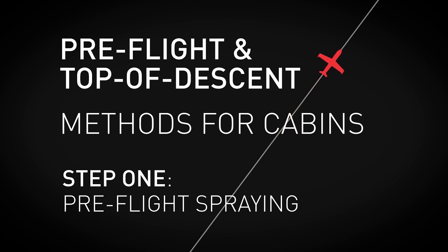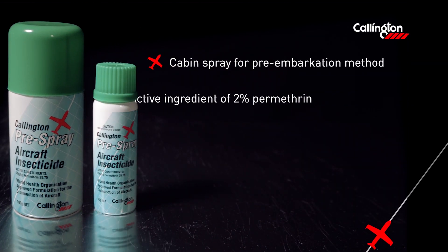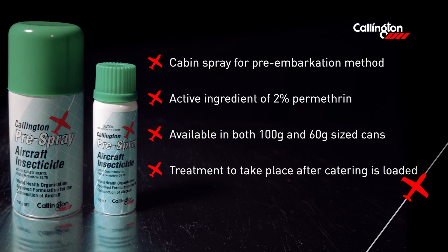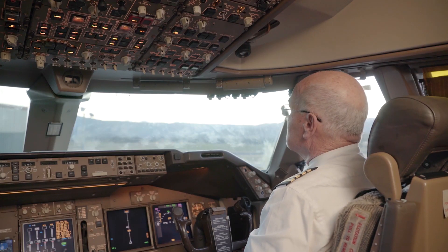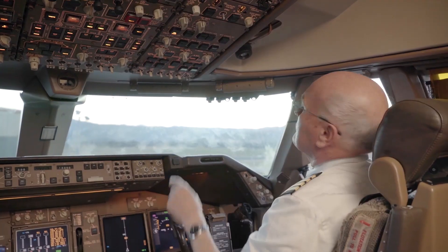The first step in this two-part method, pre-flight disinsection, involves the spraying of empty aircraft cabins before passengers board. For this treatment, Cullington recommends the 100g multi-shot pre-spray aerosol can, which contains a 2% permethrin active. Pre-flight treatment must take place after catering has been loaded onto the aircraft and before passengers board. For ventilation purposes, you may leave one main entry door per level open while the cabins are being treated. Air conditioning must be kept off during disinsection and afterwards for 5 minutes.